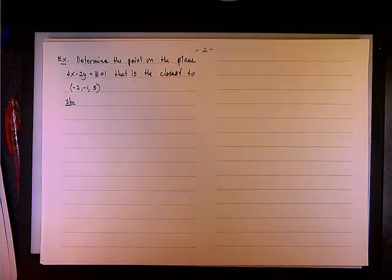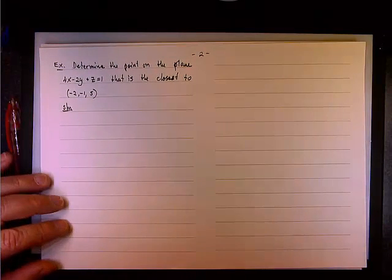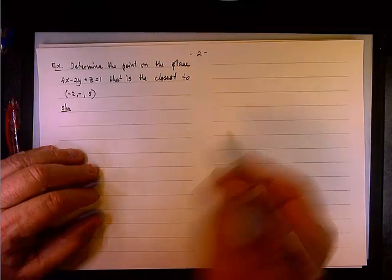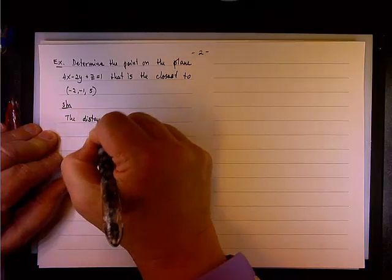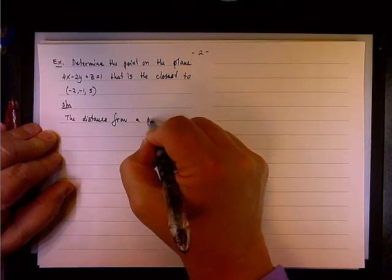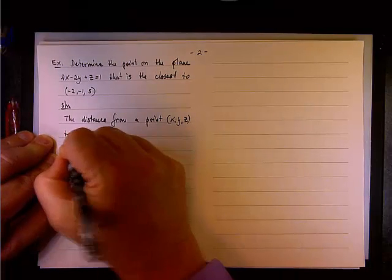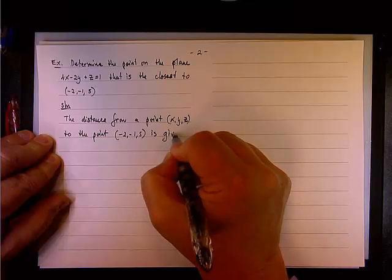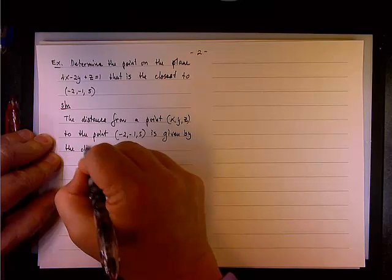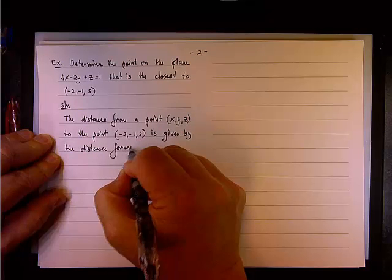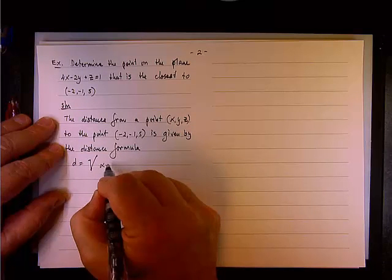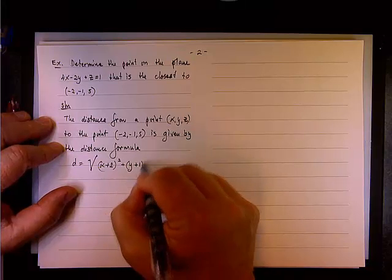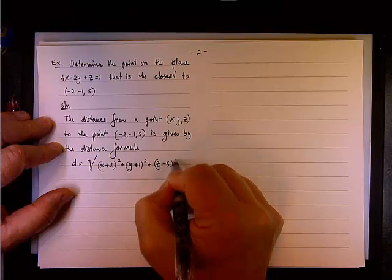So how are we going to approach this problem? We need to define the distance from a point (x, y, z) to the point (-2, -1, 5). The distance is given by the distance formula: d equals the square root of (x plus 2) squared plus (y plus 1) squared plus (z minus 5) squared.